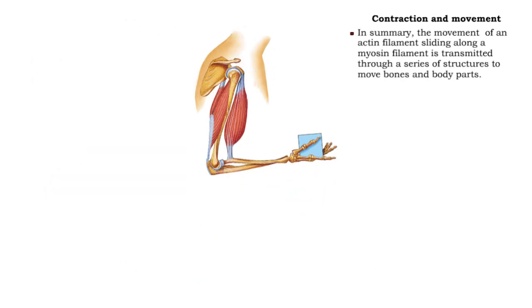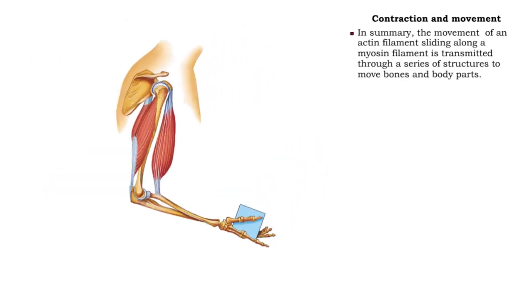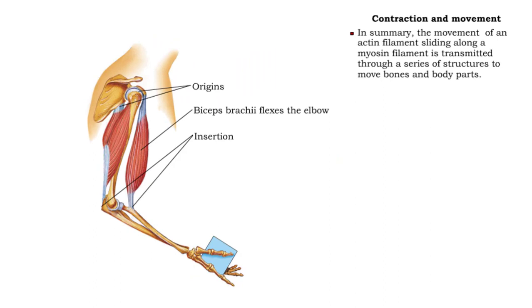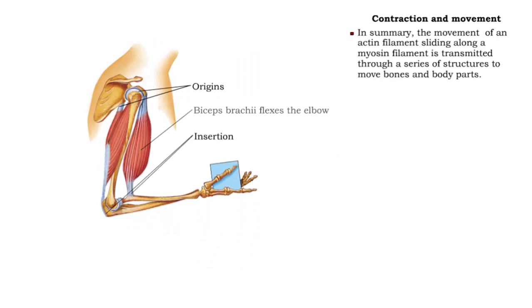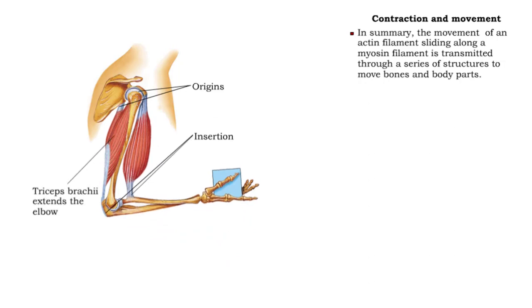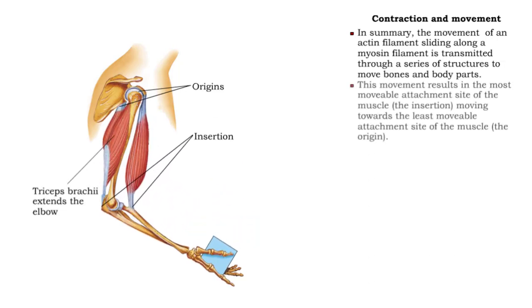In summary, the movement of an actin filament sliding along a myosin filament is transmitted through a series of structures to move bones and body parts. This movement results in the most movable attachment side of the muscle, the insertion, moving toward the least movable attachment side of the muscle, the origin.